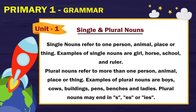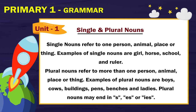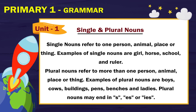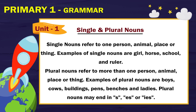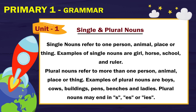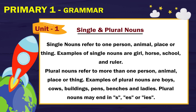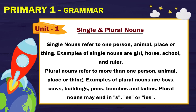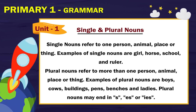Singular and plural nouns: singular nouns refer to one person, animal, place or thing. Examples of singular nouns are girl, horse, school and ruler. Plural nouns refer to more than one person, animal, place or thing. Examples of plural nouns are boys, cows, buildings, pens, benches and ladies.